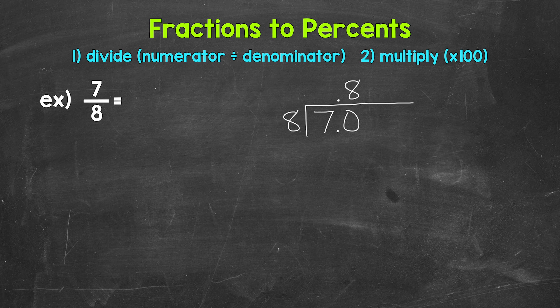Now we multiply 8 times 8, 64, subtract 70 minus 64 is 6. So we don't have that clean cut zero there at the bottom. So we can continue on by using another zero that we can bring down.